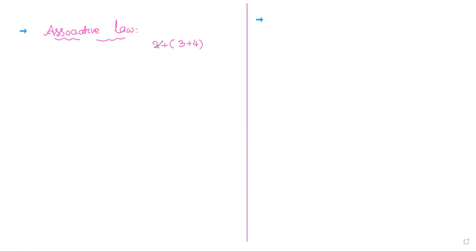You can say 3 plus 4 is 7, then 7 plus 2 is 9. Or you can write 2 plus 3 is 5, then 5 plus 4 is again 9. This is a valid law in mathematics.